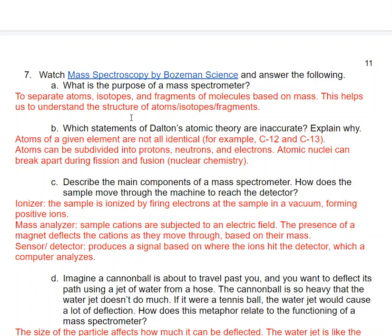Describe the main components of a mass spectrometer. How does the sample move through to reach the detector? So the first chamber is an ionizer. Basically, it fires electrons at the sample, and that knocks off some electrons from those atoms and turns them into positive ions.